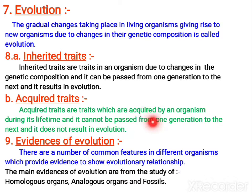An acquired trait: maybe you are fair, and when you are roaming in sunlight you can become dark. But later, when you are sitting at home, once again you may become normal. So that is an acquired trait — because of roaming in sun you have become dark. But later you become normal again, because your genetic composition determines fair color. Like that, we have inherited traits and acquired traits, and I hope you are able to distinguish between these two.